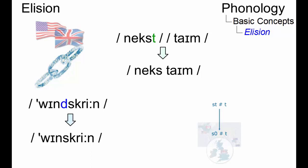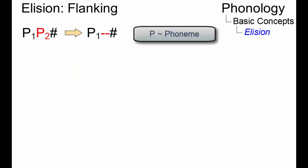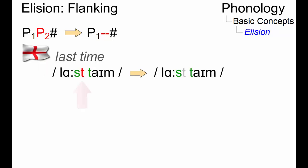In most cases, elision occurs flanking, where the position of an elided phoneme is at the edge of a word or a syllable in its citation form. Flanking elision primarily affects alveolar plosive consonants.